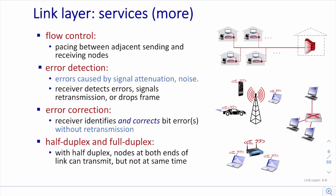Duplex is another concept. If A and B can both transmit frames to each other simultaneously, we call it full duplex. But in some scenarios, they cannot transmit at the same time — B must wait until A finishes sending and then B can send back. This is called half duplex. It depends on the underlying physical media, as some support full duplex and some do not.